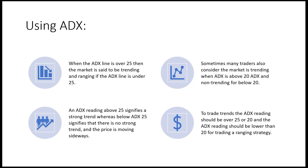When we combine DI lines with ADX — all part of Wells Wilder's Directional Movement System — when the ADX line is over 25, the market is said to be trending, and ranging if it's under 25. An ADX reading above 25 signifies a strong trend, while below 25 is a weak trend.